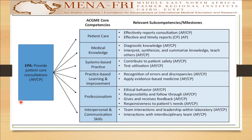For example, I want the resident to provide patient care consultation — which is the EPA — and the ACGME core competencies are listed. Each core competency is divided into subsequent sub-competencies. For instance, if the core competency is patient care, the resident should be able to effectively report a consultation in an effective and timely manner. While under medical knowledge, they should have the diagnostic knowledge to interpret, synthesize, and summarize knowledge, teach others, and so on.